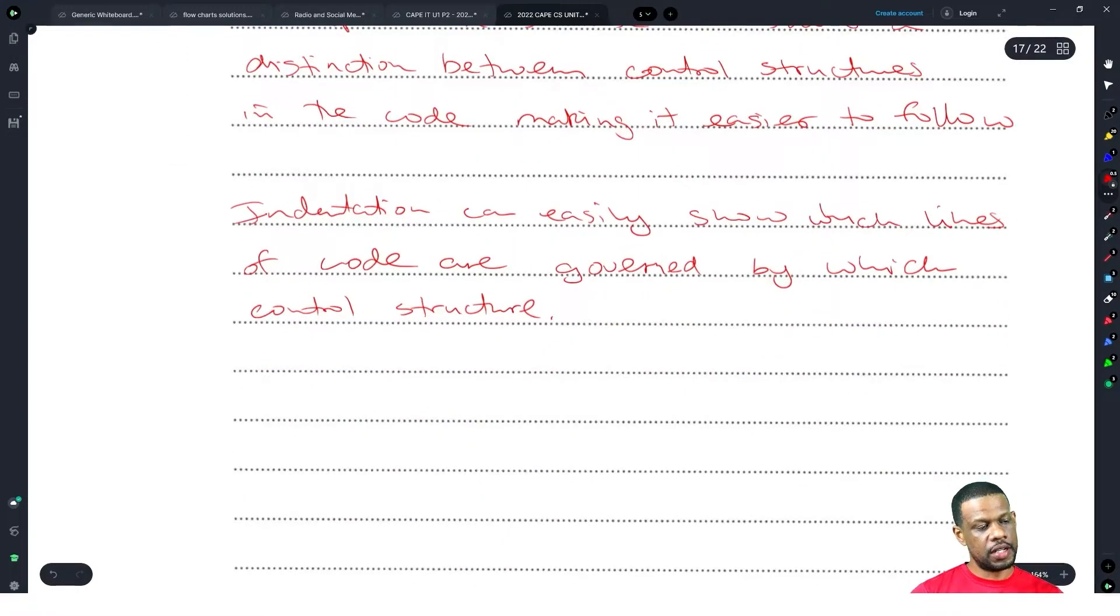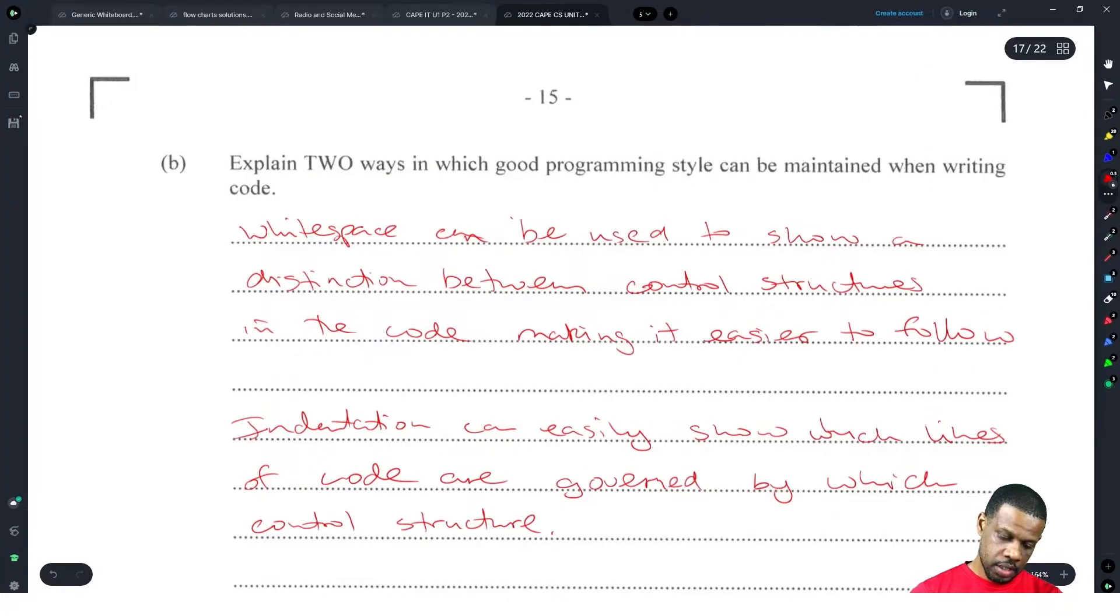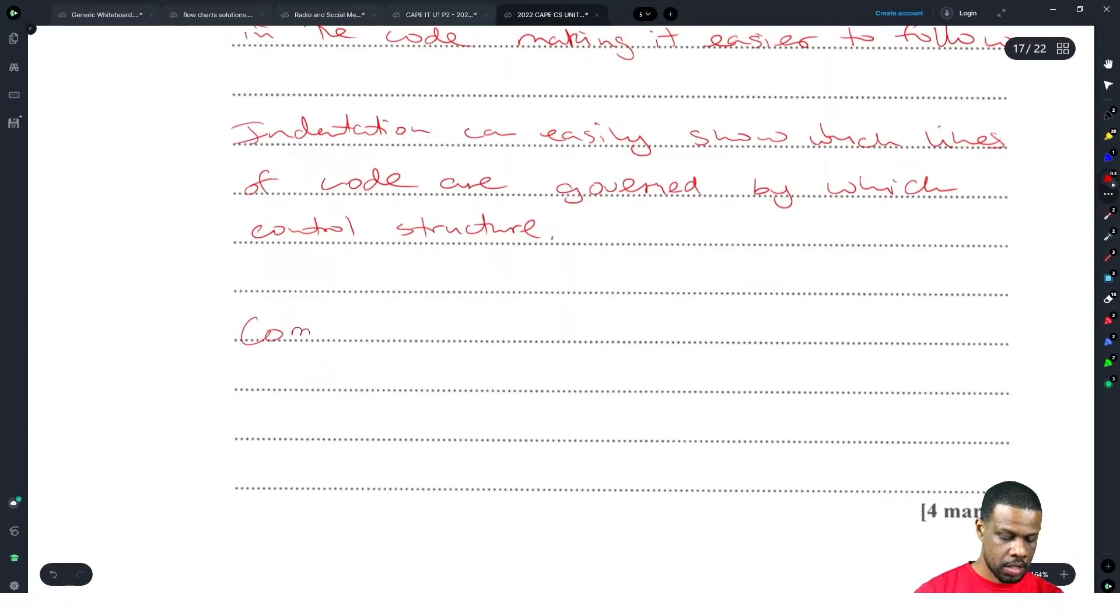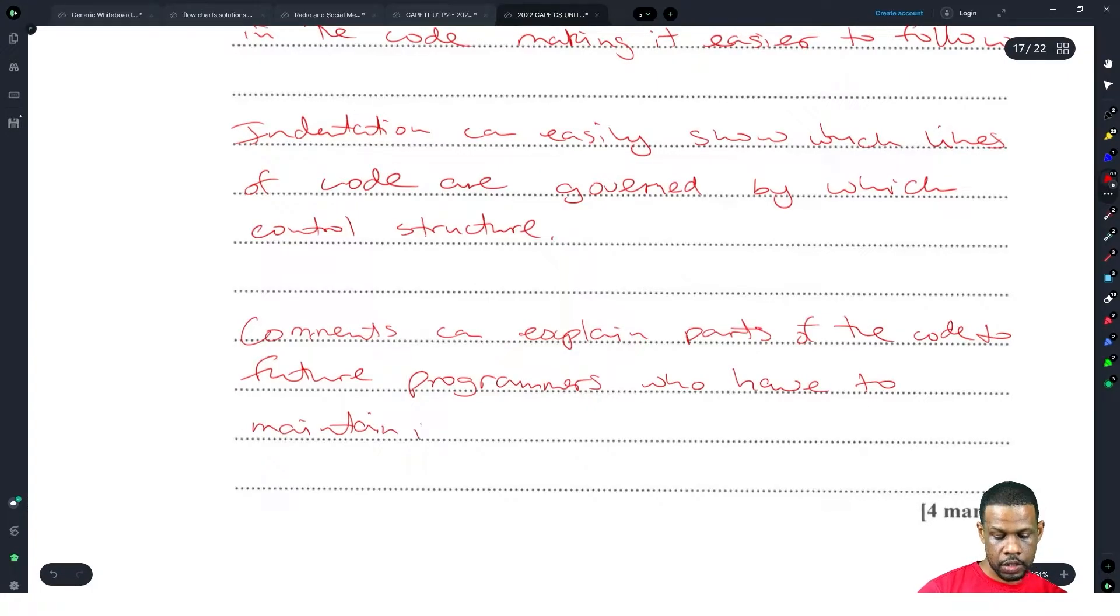White space, indentation, and comments. Comments can explain parts of the code to future programmers who have to maintain it.